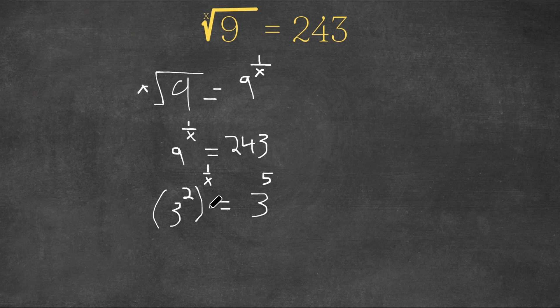Now, we have a pretty simple equation. Let's just simplify this a bit. 3 squared to the power of 1 over x. This is equal to 3 to the power of 2 times 1 over x.